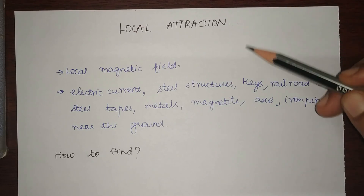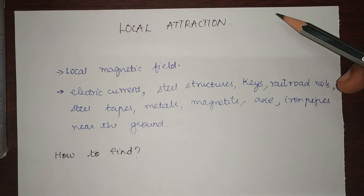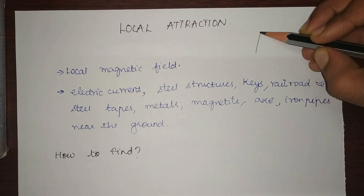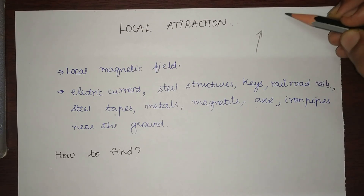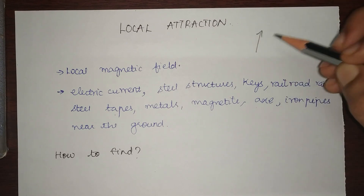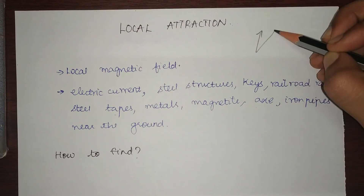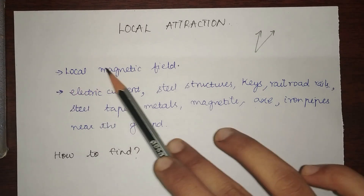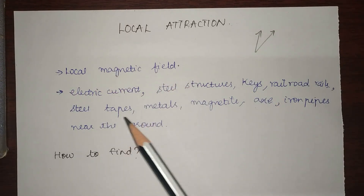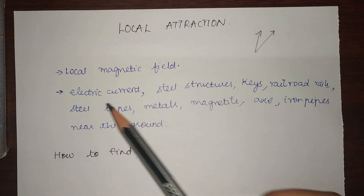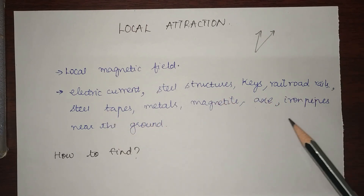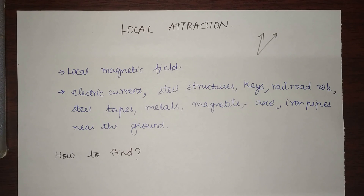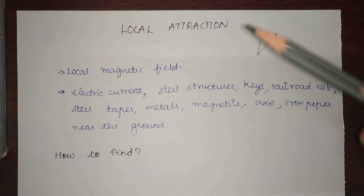While learning about magnetic meridian, we learned that when a needle is suspended without any local attraction, it will point towards the magnetic north. But if there is some local attraction, it will not point towards magnetic north — instead it will point in some other direction. There are many reasons for local attraction: local magnetic fields produced by substances like steel tapes, metals, magnetite in the earth, steel structures, electric currents, keys, rails, iron pipes, and many other metals.